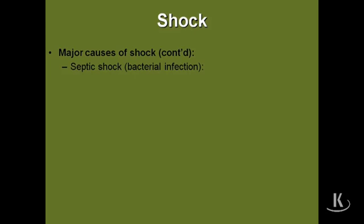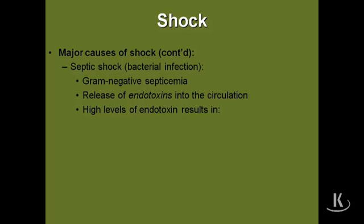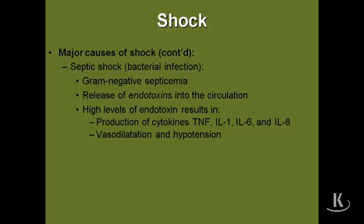Another important cause of shock is septic shock from bacterial infection. Think of gram-negative sepsis, where endotoxin damages blood vessel walls, leading to vasodilatation and extravasation of blood cells. These endotoxins in the circulation stimulate macrophages to produce cytokines — tumor necrosis factor, IL-1, IL-8, IL-6 — which lead to vasodilatation and hypotension, further exacerbating the loss of perfusion to tissue.